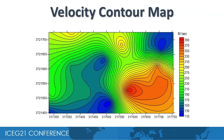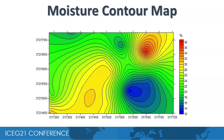This is the contour map of velocity of the topsoil in the study area. The southeastern part has higher velocity while the southwestern and northeastern regions have lower velocities. Similarly, this is the contour map of moisture content of the topsoil. Since velocity and moisture have an inverse relationship, regions where velocity is higher have lower moisture content, while regions where velocity is lower have higher moisture content.